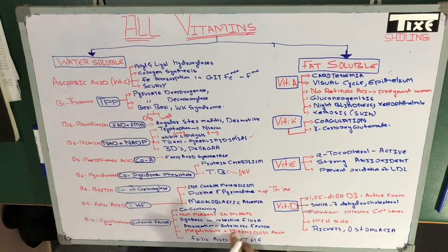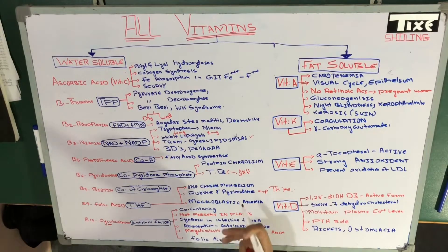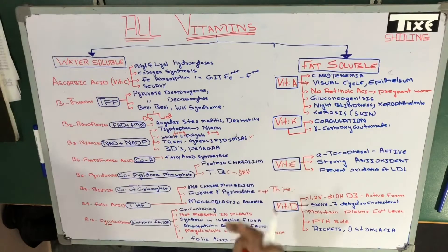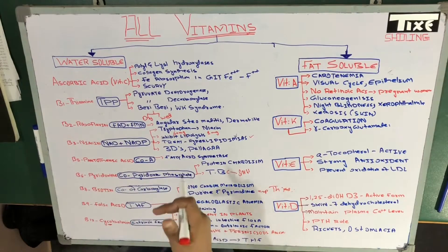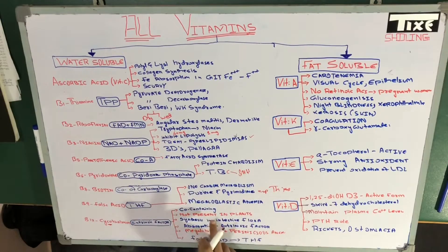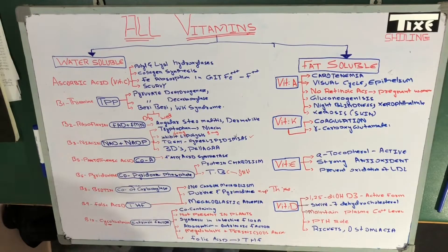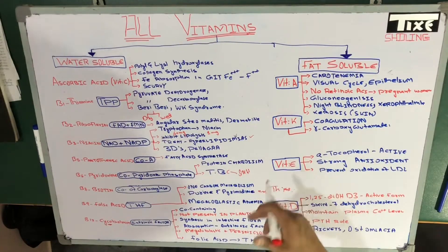This vitamin is cobalt-containing and is actually not present in plants. All other vitamins are present in plants, but this one is not. So this is what separates it from other vitamins: cobalt-containing, not present in plants, and synthesized by intestinal flora.